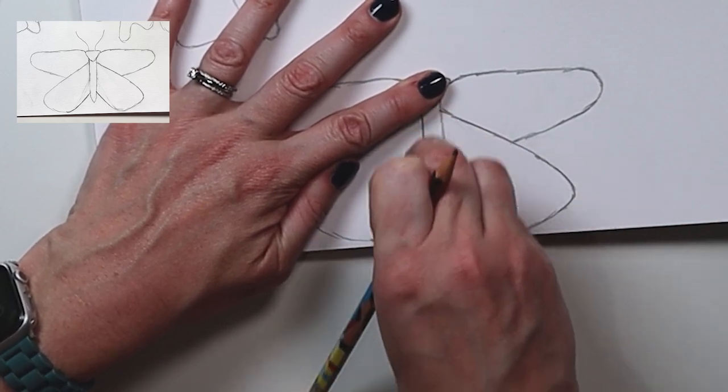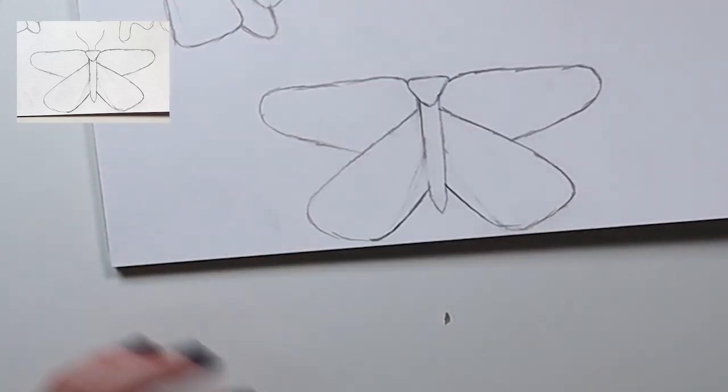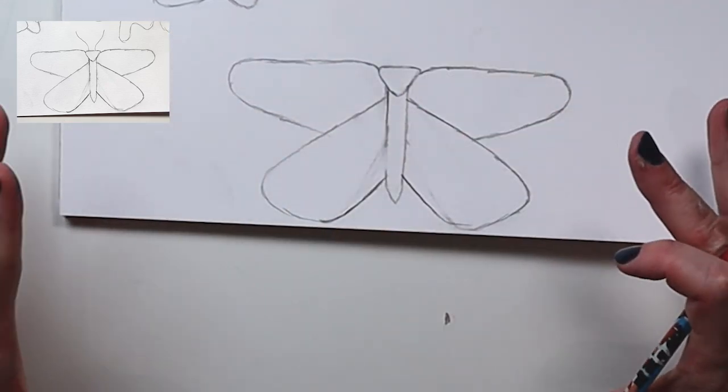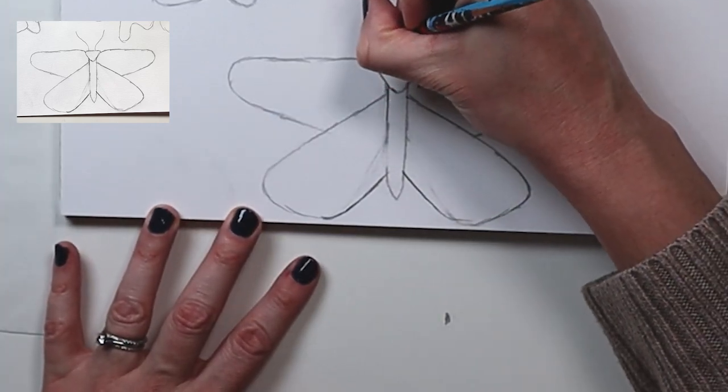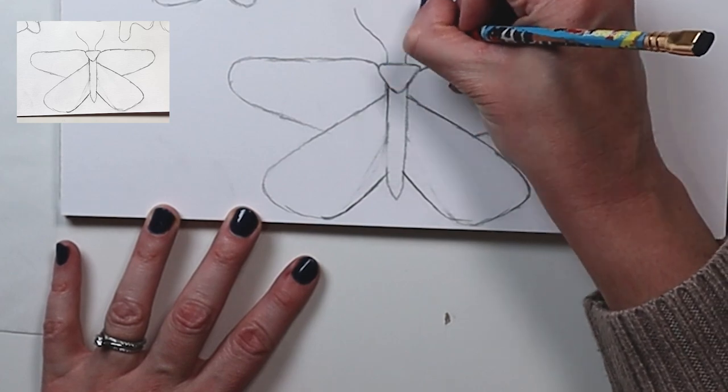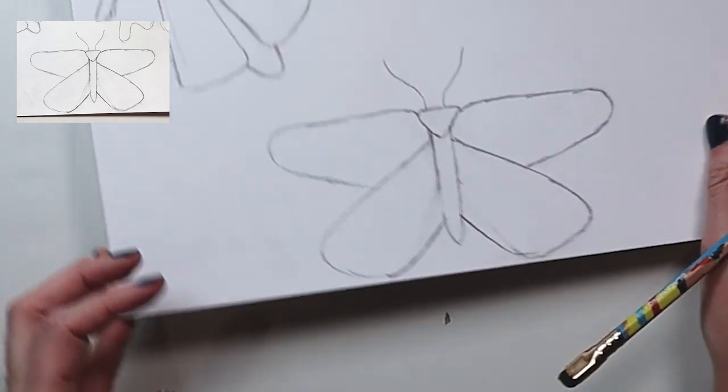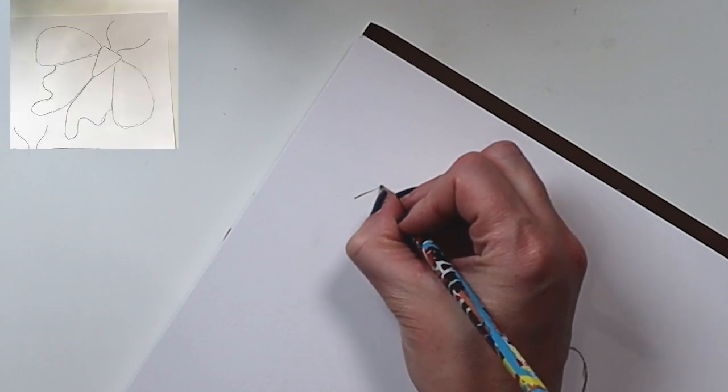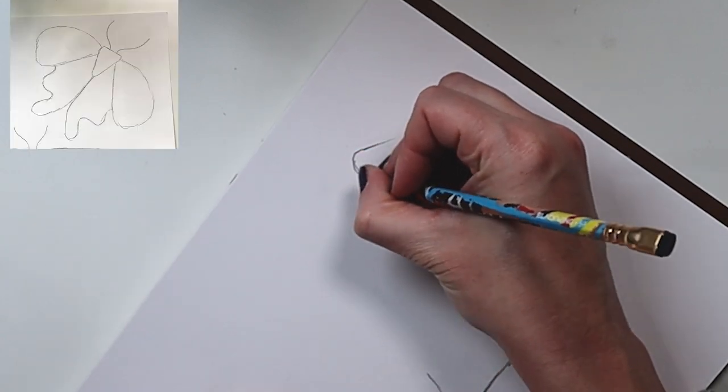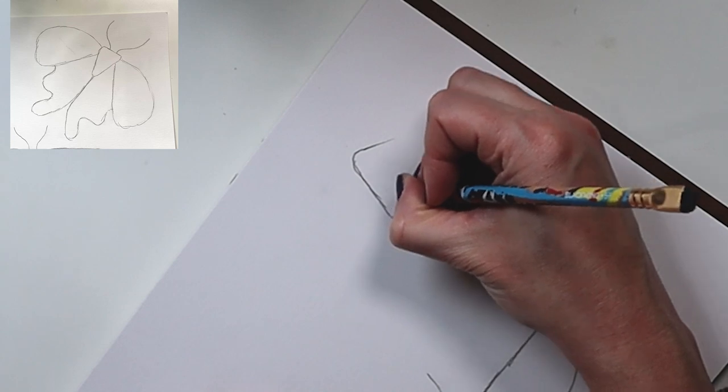And then we are going to draw the antenna, which are going to be super simple and straightforward. And now we're going to draw our third moth, which is my favorite. We're going to draw a slightly bigger rounded triangle or elongated triangle, so draw it a little bit longer for a thicker body.